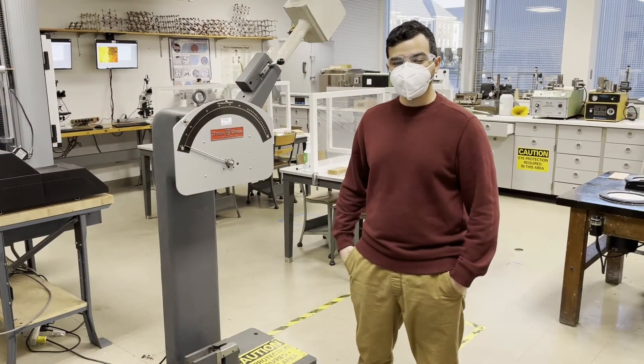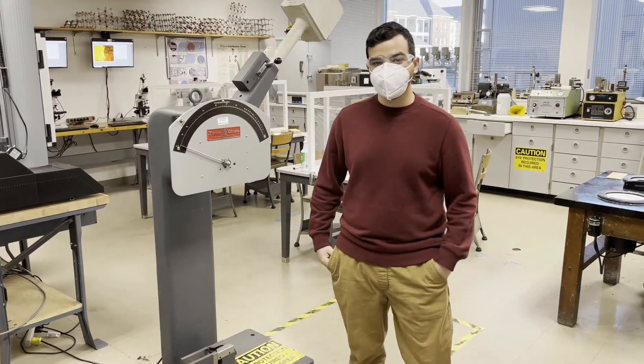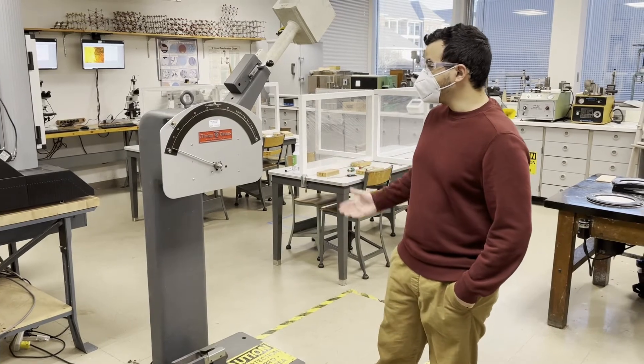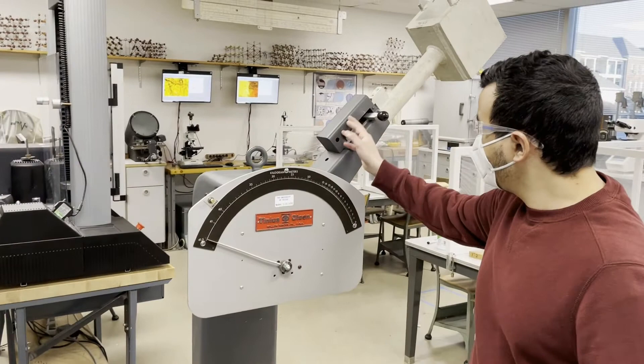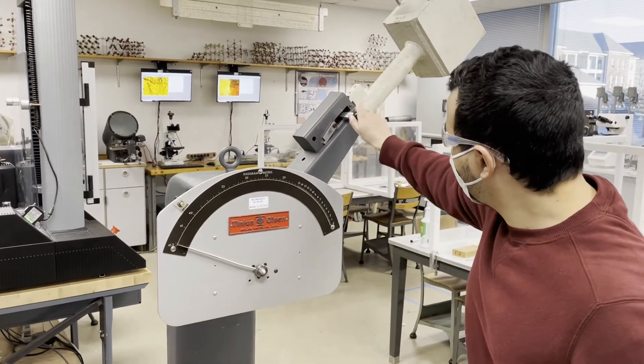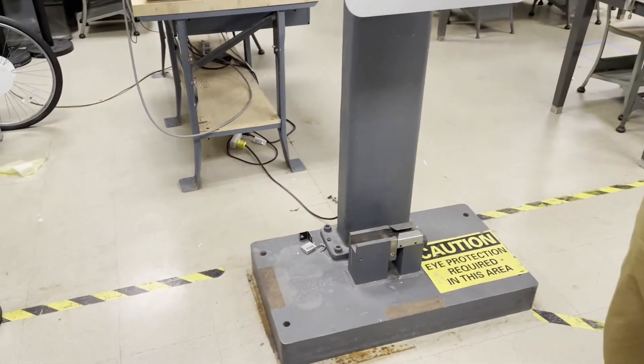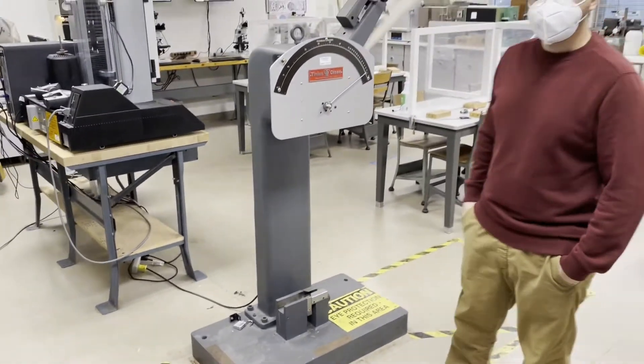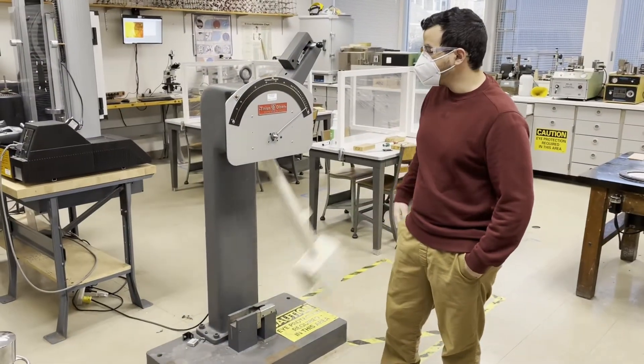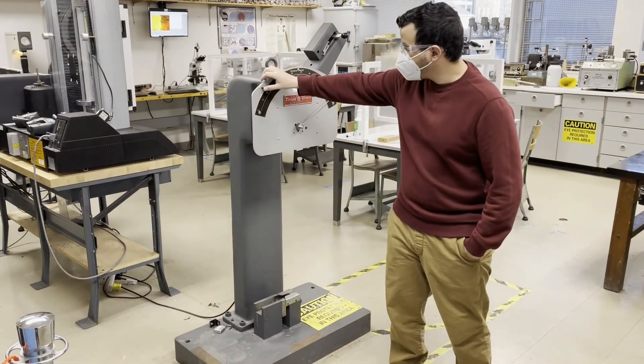Now for our last experiment that we're going to quickly show you, it's the impact tester that we have at the material science and engineering lab. As you can see, we can use this to test the resistance to break of any type of coupons, as long as it's shaped and properly examined.